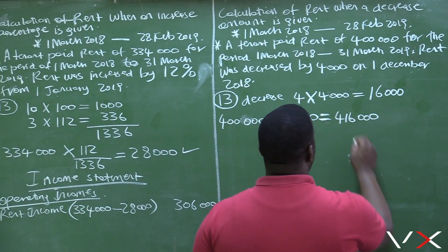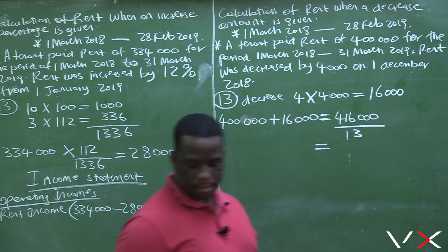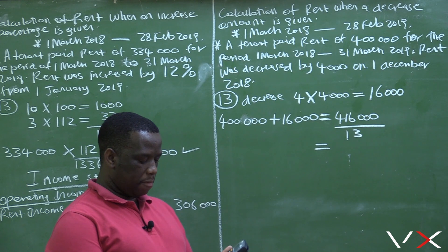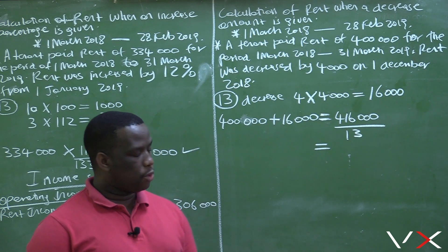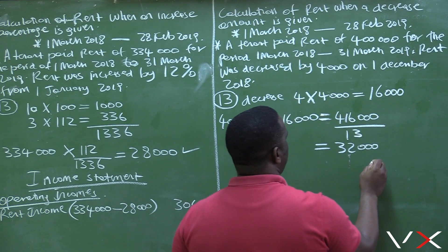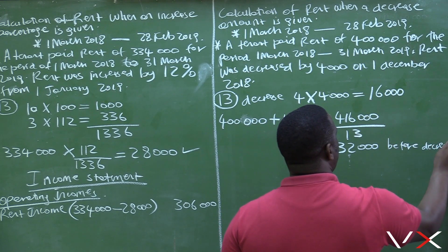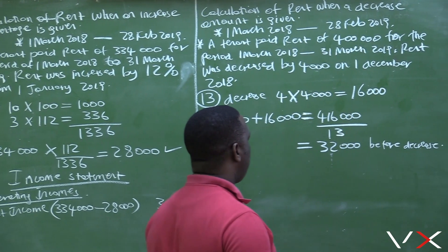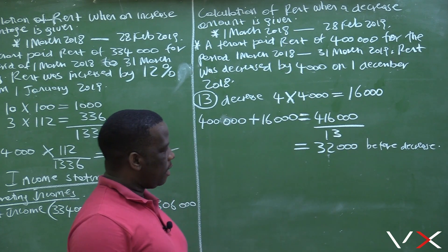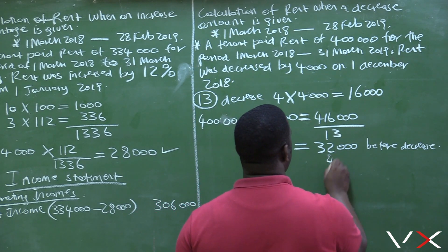So we can now divide four hundred and sixteen thousand by 13. Four hundred and sixteen thousand divided by 13 equals thirty two thousand. So rent before decrease was thirty two thousand. Remember, we are getting this thirty two thousand from the amount where we added back the decrease to get four hundred and sixteen thousand. The decrease per month is four thousand.